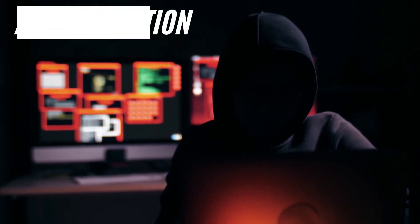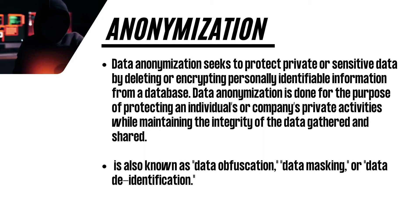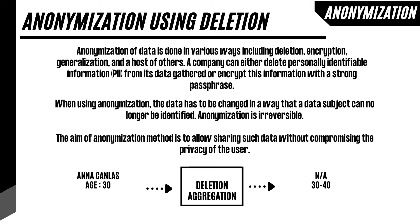Data anonymization seeks to protect private or sensitive data by deleting or encrypting personally identifiable information from a database. It is done for the purpose of protecting an individual's or company's private activities while maintaining the integrity of the data gathered and shared. It is also known as data obfuscation, data masking, or data de-identification. Anonymization of data is done in various ways including deletion, encryption, generalization, and others. A company can either delete personally identifiable information (PII) from its gathered data or encrypt it with a strong passphrase. The data has to be changed in a way that a data subject can no longer be identified. Anonymization is irreversible — the aim is to allow sharing such data without compromising the privacy of the user.